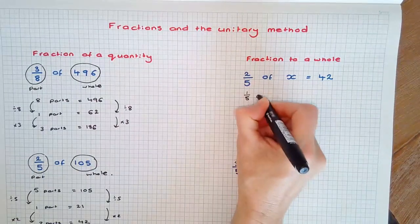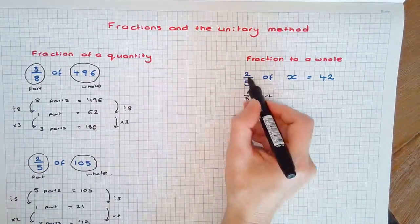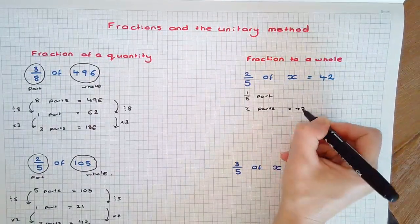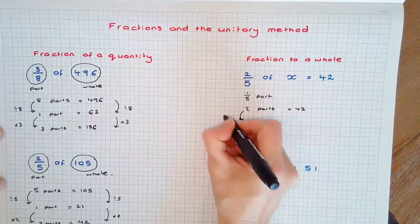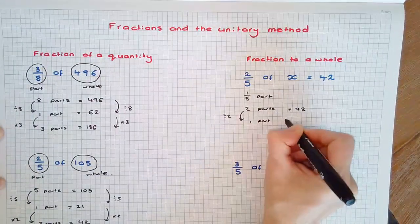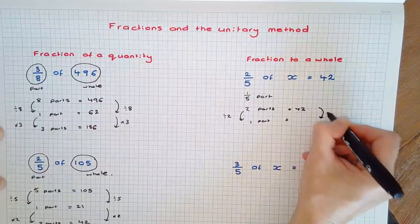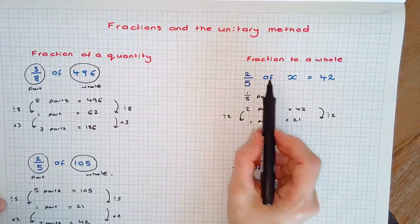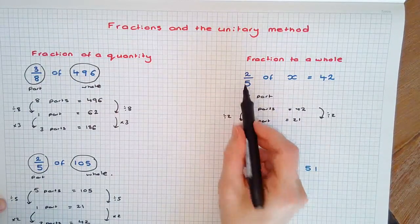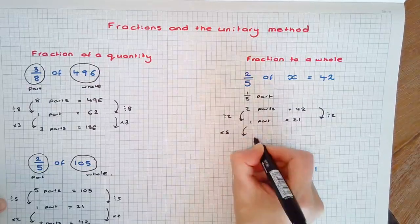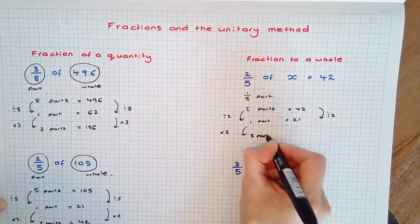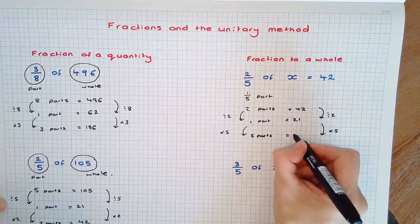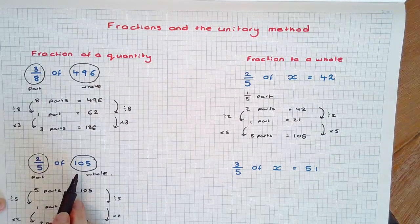1 fifth is the part. So 2 parts equals 42. Therefore, 1 part equals 21, as we found earlier. Now, we're after finding the whole here. So 5 parts will be the whole. 21 times 5 is 105, which is what this question was earlier.